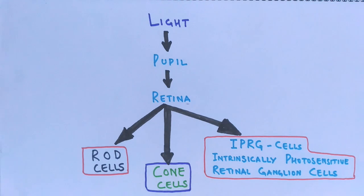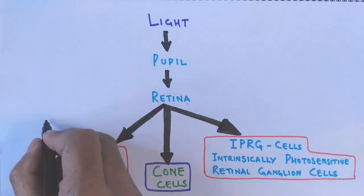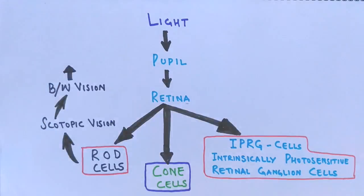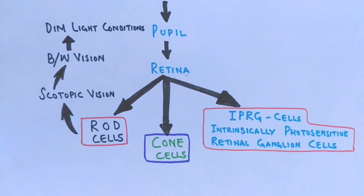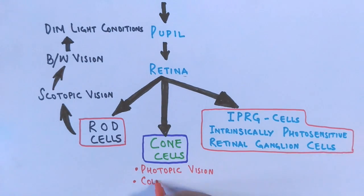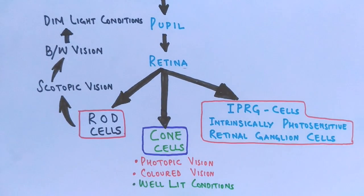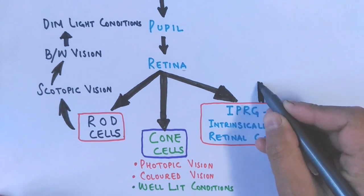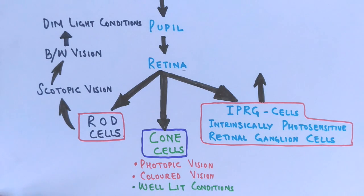Rod cells give us scotopic vision — that's black and white vision — perceived under dim light conditions. Cone cells give us photopic vision — colored vision — perceived under bright conditions like daytime. To know more about scotopic and photopic vision, you can watch the linked video above.